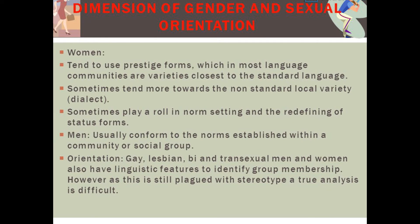Dimension of gender and sexual orientation. Women tend to use prestige forms, which in most language communities are varieties closest to the standard language. They sometimes tend more towards the non-standard local variety or dialect, and sometimes play a role in norm-setting and the redefining of status forms. Men usually conform to the norms established within the community or social group. Gay, lesbian, bi, and transsexual men and women also have linguistic features to identify group membership; however, as this is still plagued with stereotype, a true analysis is difficult.